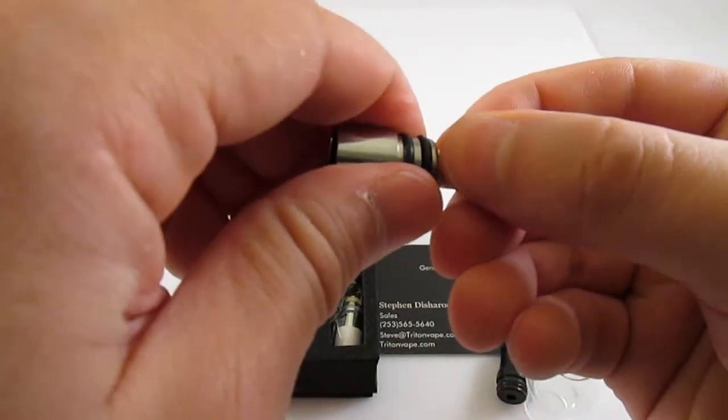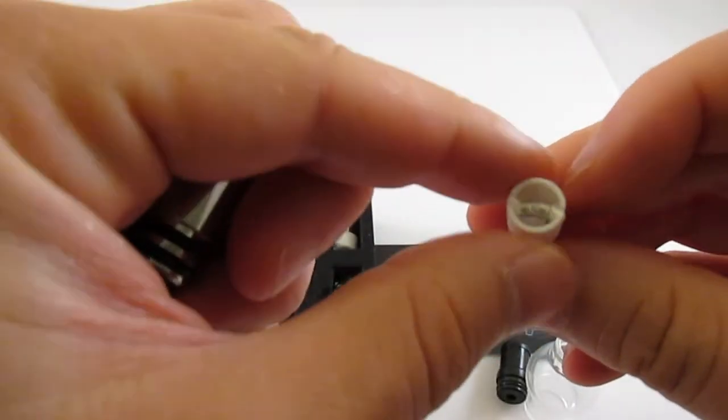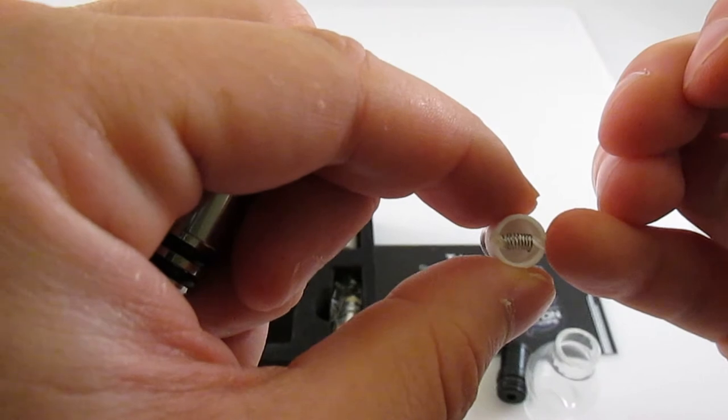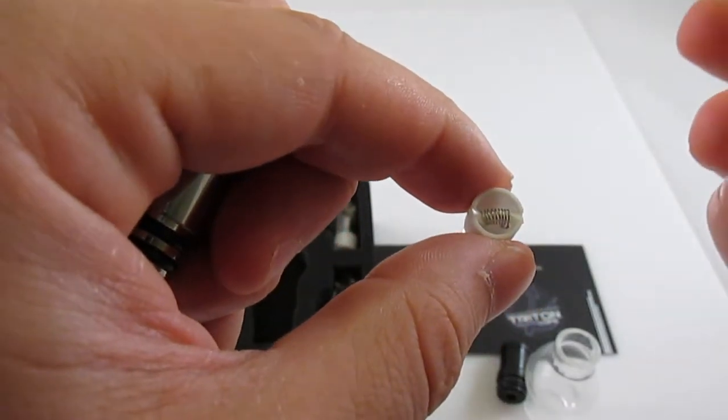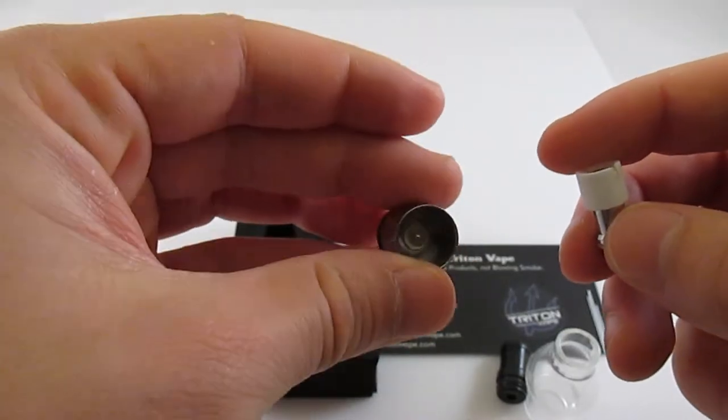You have the atomizer. What this does is, you can see right here, you put your product right there on the coil and then the heater supply, you know how vaporizers work. And here's your base.